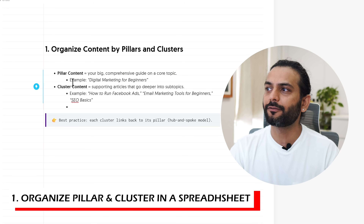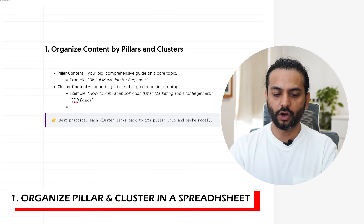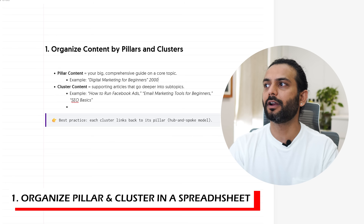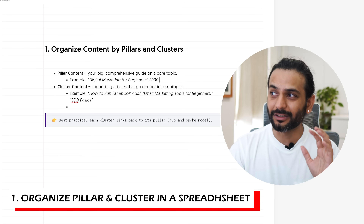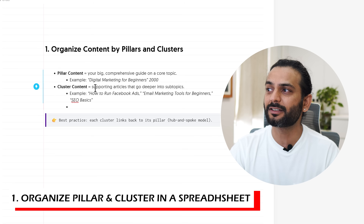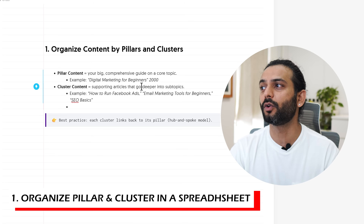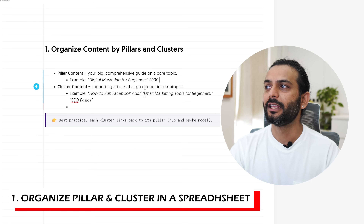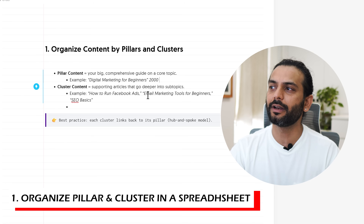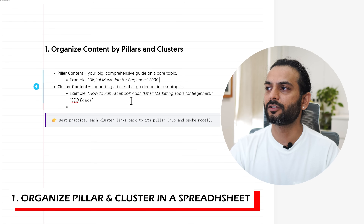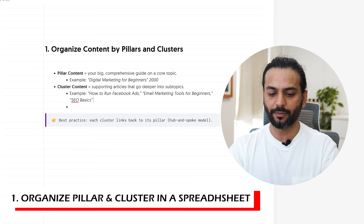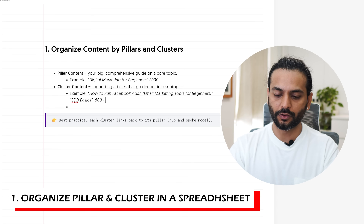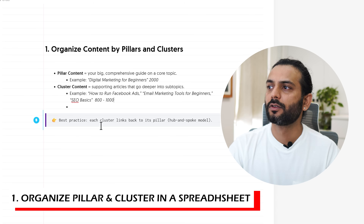Pillar content will be a big comprehensive guide on a core topic — for example, 'Digital Marketing for Beginners.' This should be at least 2,000 words and very detailed. Cluster content will be supporting articles that go deeper into subtopics, for example how to run Facebook ads, email marketing tools for beginners, or SEO basics. Cluster content is typically 800 to 1,000 words.